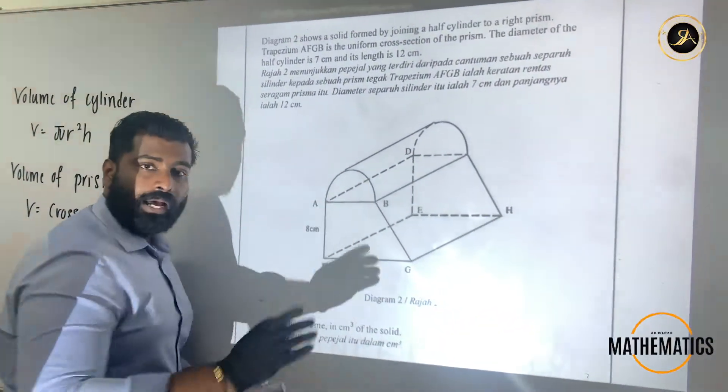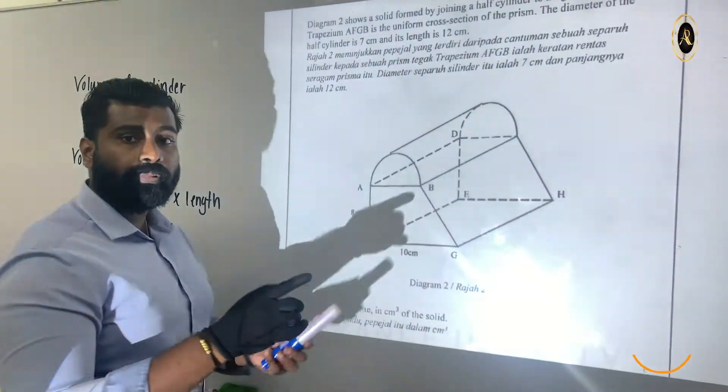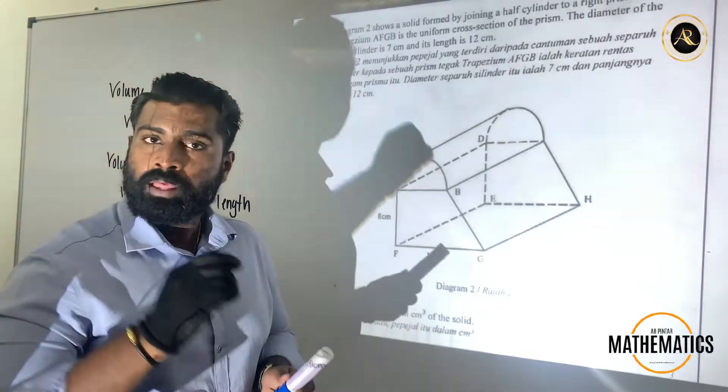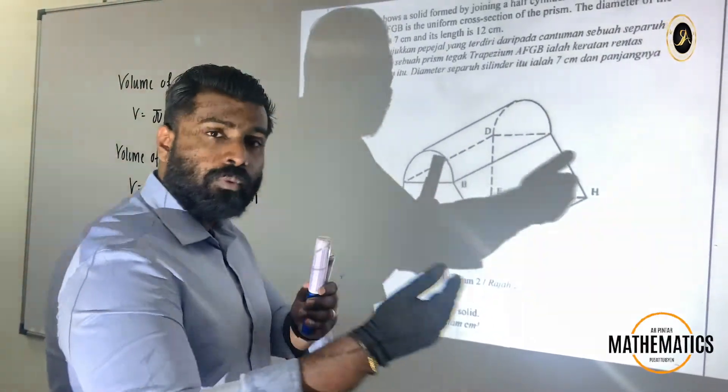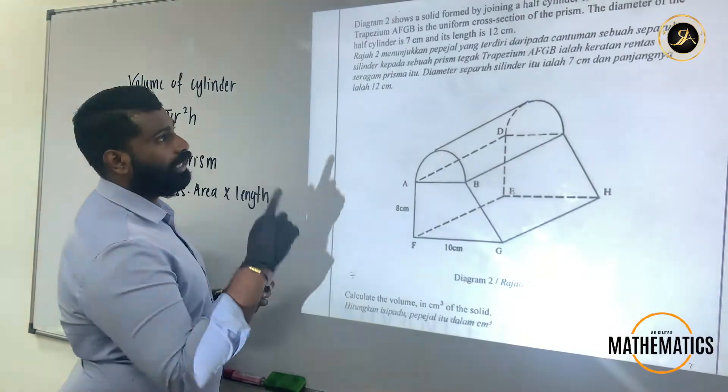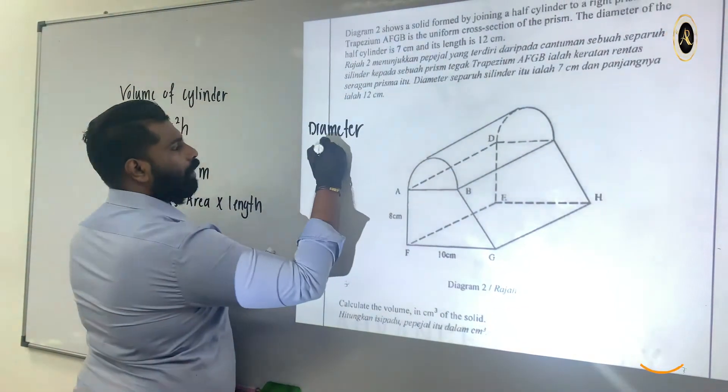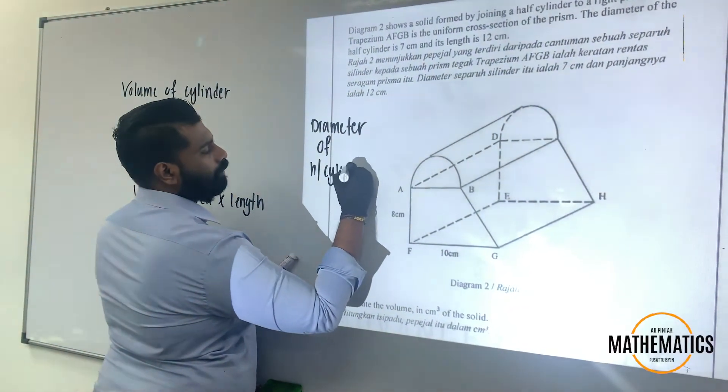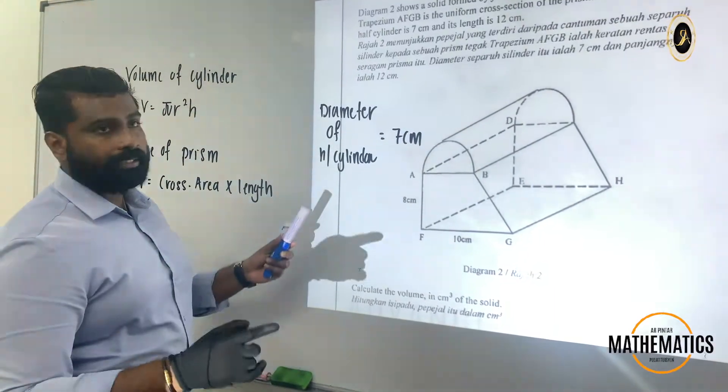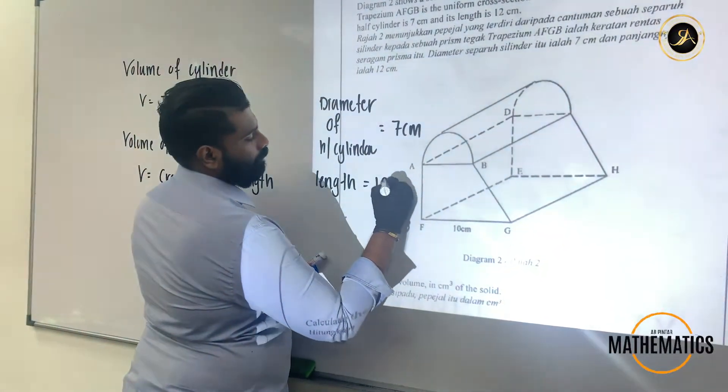Now we look at this one. This one is a cylinder but half cylinder. If you notice that, they already tell you that the first thing stated is half cylinder and prism is formed by joining. Whenever there is a word joining, automatically we are going to add the answer. Whenever they mention remove or they are talking about cut, automatically it can be subtracted. If you notice, they already tell you the diameter of the half cylinder is 7 cm and the length is 12 cm.